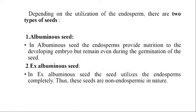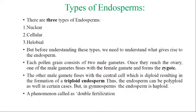The second type is the ex-albuminous seed. In ex-albuminous seeds, the seed utilizes the endosperm completely; thus these seeds are non-endospermic in nature. At the time of embryo development, all the endosperm is utilized for the growth of the embryo in the seed, and the seed becomes non-endospermic — only the embryo remains. Such seeds are known as ex-albuminous or non-albuminous seeds.